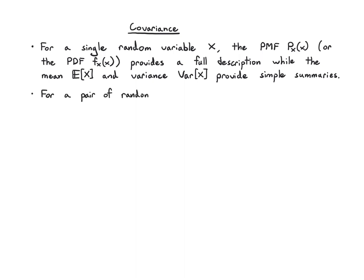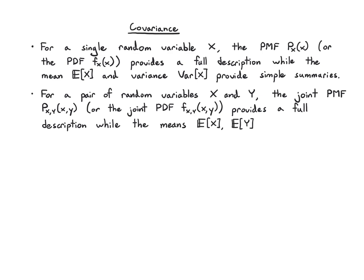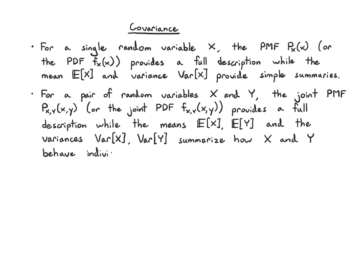For a pair of random variables x and y, the joint PMF p, or in the continuous case the joint PDF f, provides a full probabilistic description of what the two random variables are doing jointly. While the means and variances of x and y are only summarizing how x and y behave individually — they do not capture anything about their relationship, because you could calculate each of these directly from the marginals. So the question is: can we summarize the relationship or dependencies between x and y with a single number?